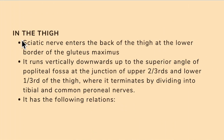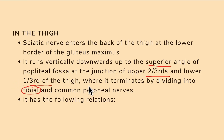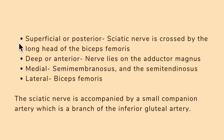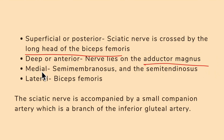To summarize the course in the thigh: the sciatic nerve enters at the lower border of gluteus maximus and runs vertically to the superior angle of the popliteal fossa at the junction of the upper two-thirds and lower one-third, terminating into tibial and common peroneal nerves. Posteriorly it is crossed by the long head of biceps femoris, anteriorly it lies on adductor magnus, medially on semimembranosus and semitendinosus, and laterally on biceps femoris.